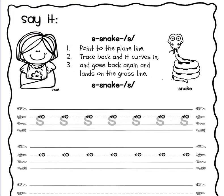We are going to start on the plane line. We are going to trace back around and it curves in and goes back again and lands on the grass line. Make a slithering snake. Starting at the plane line, we are flying backwards again with those curves.